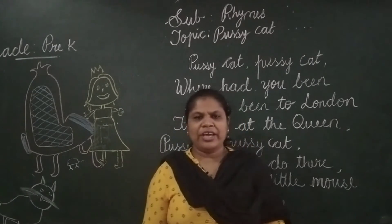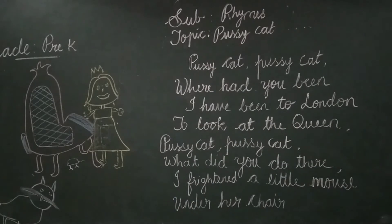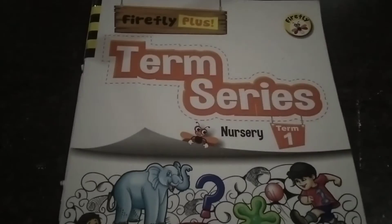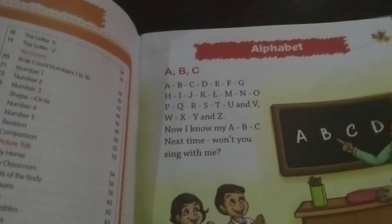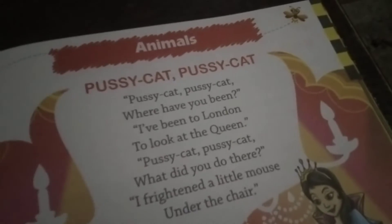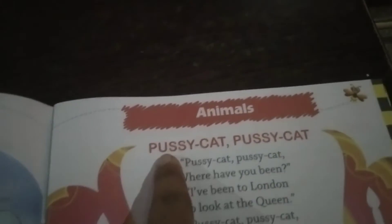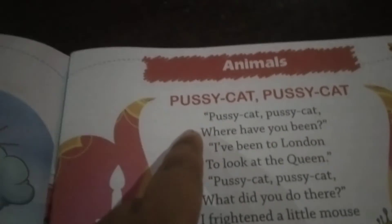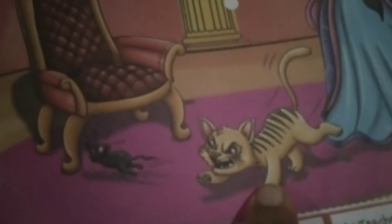Now we will see from the textbook. This is your Term 1 book — Fast Flight Class Term Series 1. You can open page number 7. The next rhyme is on page number 7. Pussycat, pussycat — this is the rhyme on an animal. See, this is a pussycat. There is a chair, there is a queen, and there is a mouse.